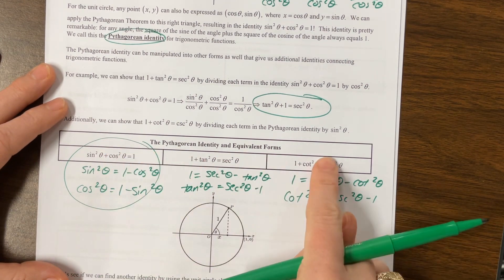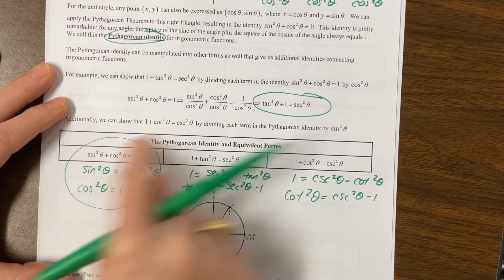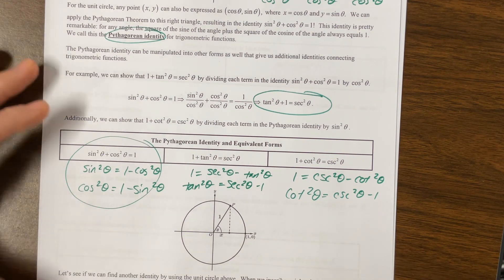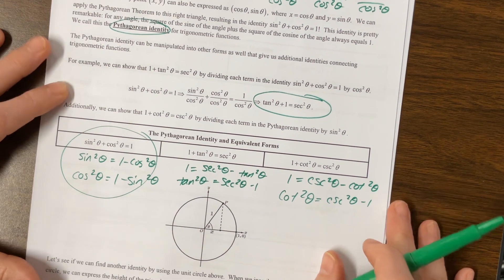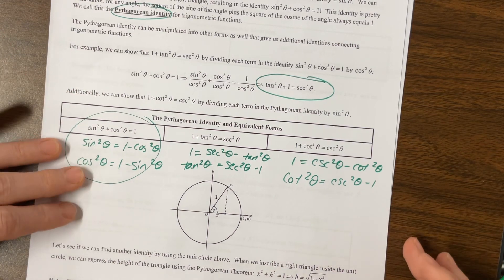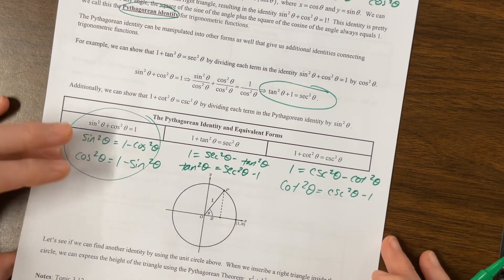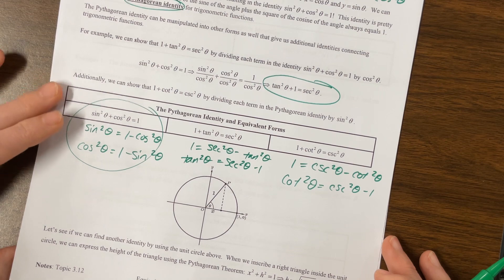And so this would be 1 equals cosecant squared minus cotangent squared. We could also say that cotangent squared theta equals cosecant squared theta minus 1. So you can think of it as 1 Pythagorean identity, and then you manipulate to find all the others. You can think of it as 3, and then you can manipulate, or you can think of it as 9 in total. This we use all the time, and it becomes very important as we keep going.